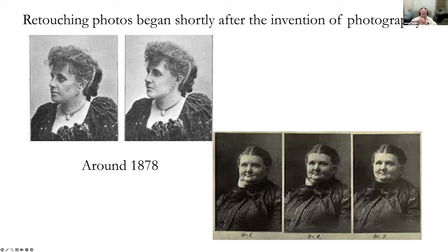If you look closely at these two photos, the one on the left is a little bit different than the one on the right, and the one on the right makes the person look a little bit different than they were. They did this by physically altering either the negative or a positive print — going in and physically changing it using paint, pencils, and other things on the negative to change the information that was there. So this isn't something very new; it's been around for a long time.